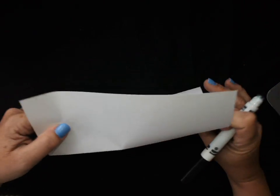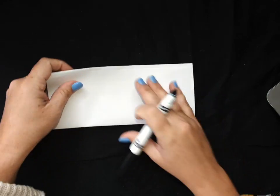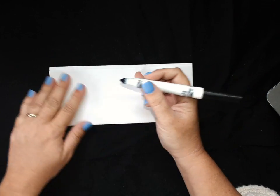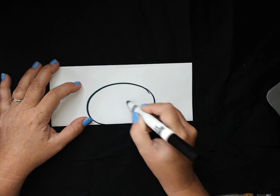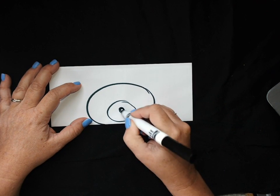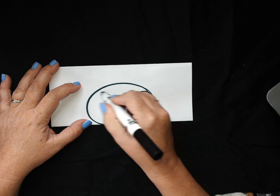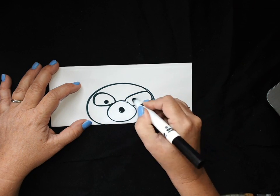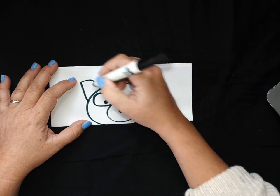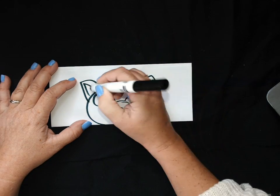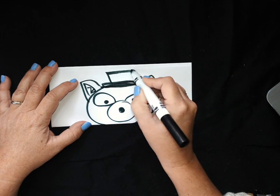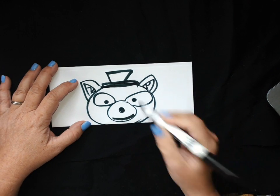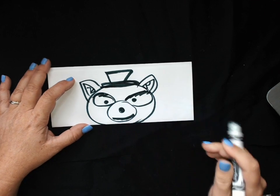So first person, go ahead and fold that back up. You're going to create whatever head you want. It could be anything. It could be really goofy. I'm going to do a raccoon. And I can give him a hat, anything I want. He looks really mad.